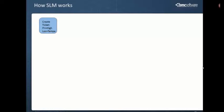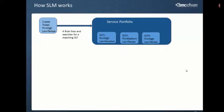First, you're going to create a new ticket in the system. Let's say that ticket has fields priority and location. When someone creates this new ticket, they fill out the priority as high and the location as Tampa. There's going to be a rule associated with that ticket, and it's automatically going to look for a matching service level target. In the service portfolio, let's say we already have three service level targets, and within them they also have fields called priority and location with specific values for each one.